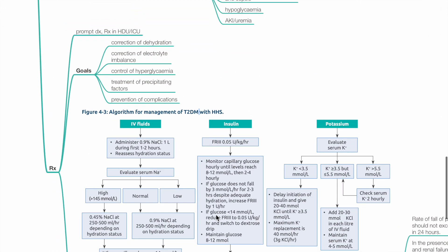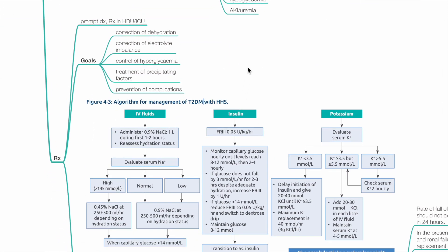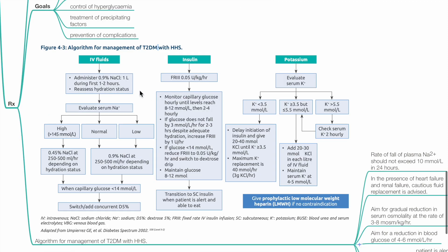Treatment of HHS: From diagnosis with treatment in HDU or ICU. Goals include correction of dehydration with IV fluids, correction of electrolyte imbalances, control of hyperglycemia with insulin, treatment of precipitants, and prevention of complications. For IV fluids, administer normal saline 1 liter over first 1-2 hours and reassess hydration status. Evaluate serum sodium levels.